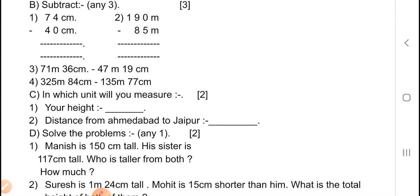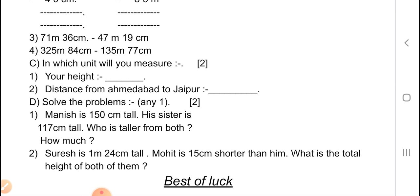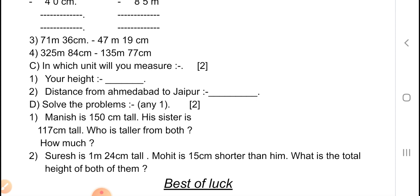Now D — solve the problems, any one, carries 2 marks. First question: Manis is 150 centimeters tall, his sister is 117 centimeters tall — who is taller and by how much? Show the calculations; marks depend on the calculations and the manner in which you write the answers. Second question: Suresh is 1 meter 24 centimeters tall, Mohit is 15 centimeters shorter than him — what is the total height of both? Solve in your book, supplementary, or paper.